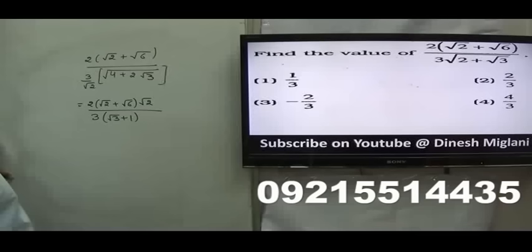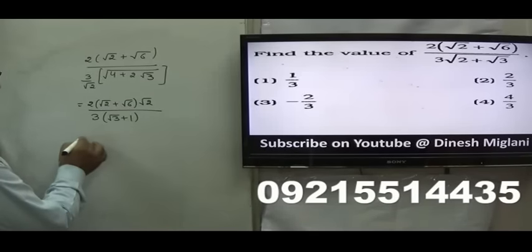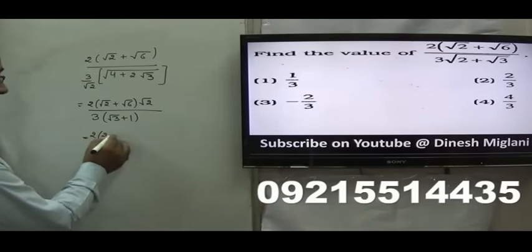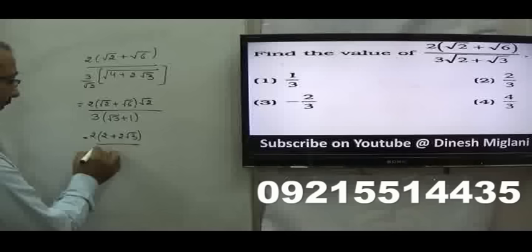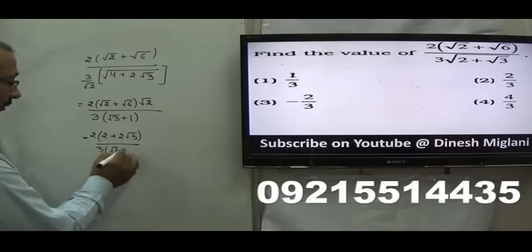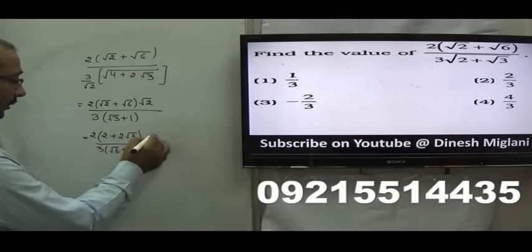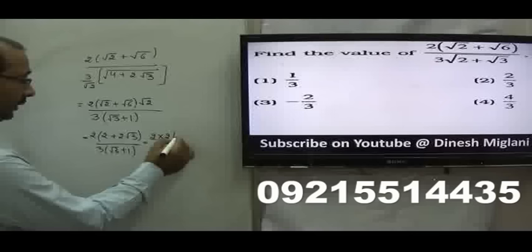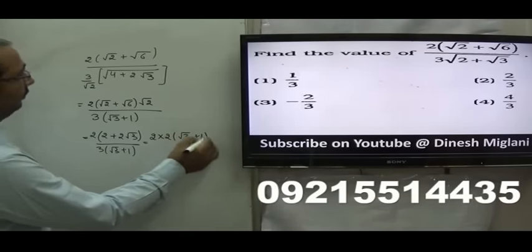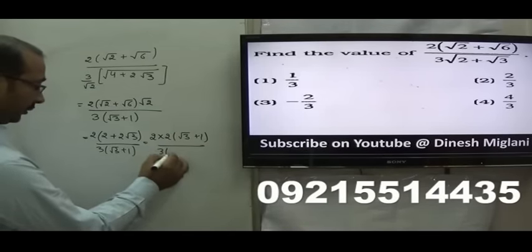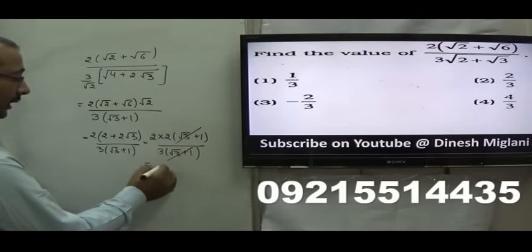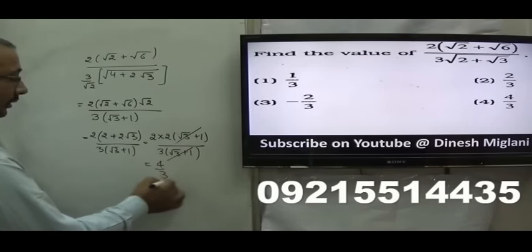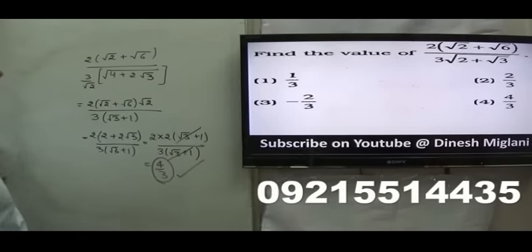Just multiply by √2 inside: that gives 2 + √12, which is 2√3, divided by 3(√3 + 1). If I take 2 as common, I get 2(√3 + 1) in the numerator and 3(√3 + 1) in the denominator. This cancels out, leaving 4/3. Hence the fourth option is my answer: 4/3.